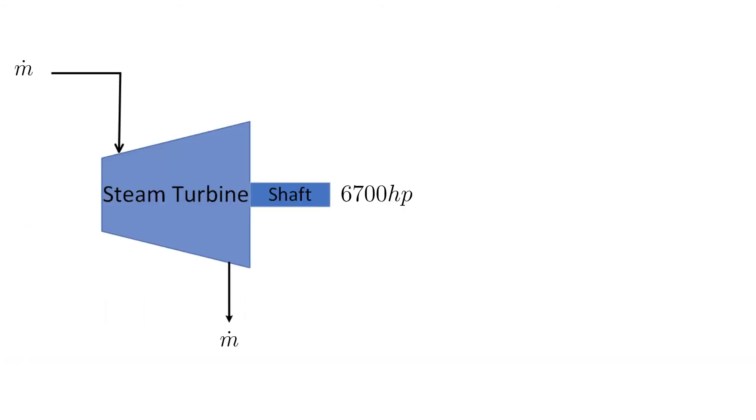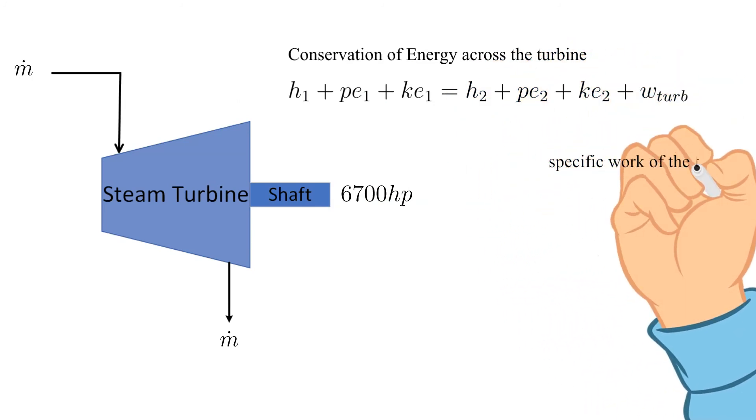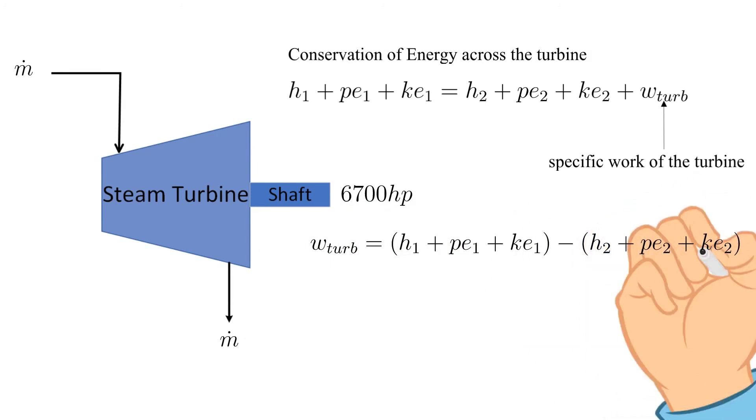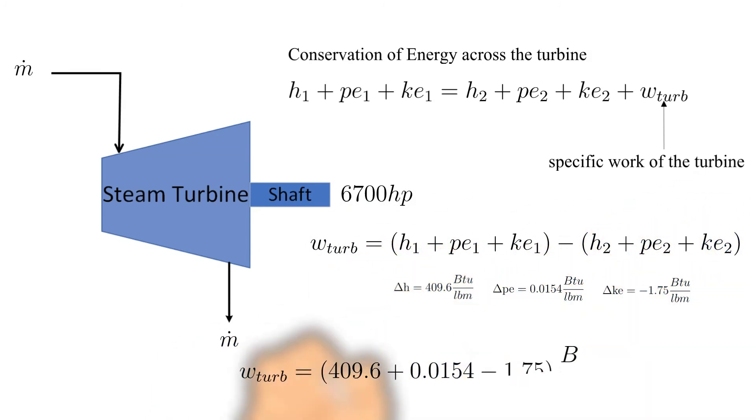First we need to find the specific work of the turbine. We apply conservation of energy across the turbine as shown here. Luckily we have already calculated the change in specific enthalpy, potential energy, and kinetic energy. All that is left is to solve for the specific work of the turbine. The results are shown here.